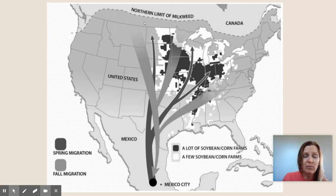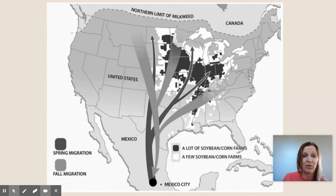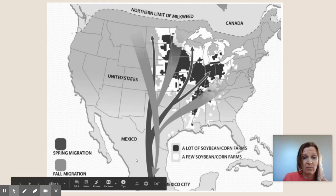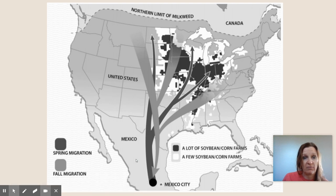Keep in mind that monarchs are eating milkweed when they are in the United States and in Canada, and milkweed is also really important for monarch breeding. When they are in Mexico, they are not eating primarily during that time period when they're down there.